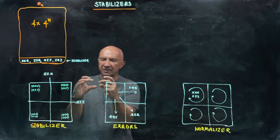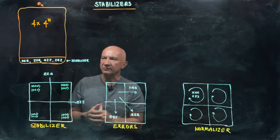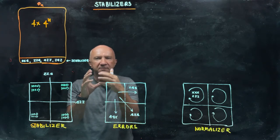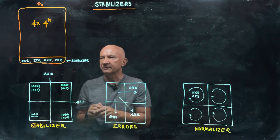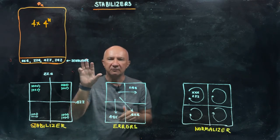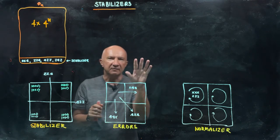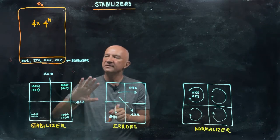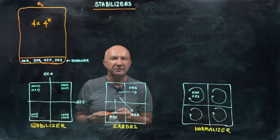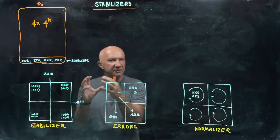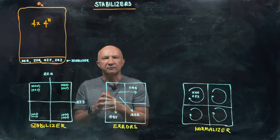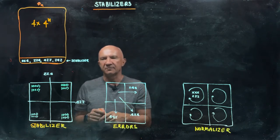When I pick this abelian subgroup, which I will call the stabilizer, this abelian group of Pauli operators will be responsible for partitioning Hilbert space into subspaces. One of them will be the code subspace and the others will be called error subspaces. As an example, I'm going to use our three-qubit repetition code, where we encoded one qubit into three qubits. So we are now dealing with a Hilbert space of dimension eight.